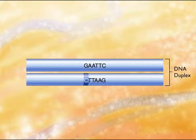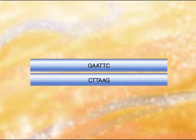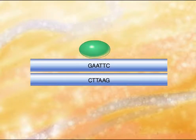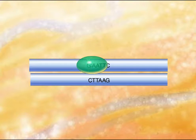Because the same recognition sequence occurs in both strands of the DNA duplex, the restriction endonuclease can bind to and cleave both strands of the DNA molecule.